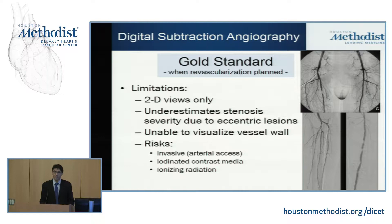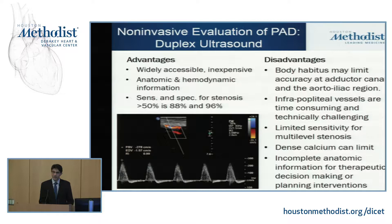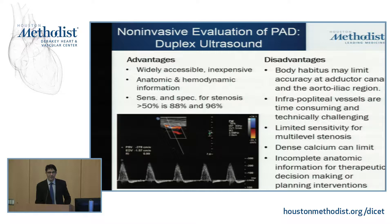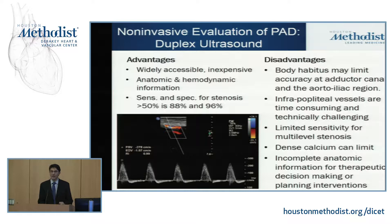Ultrasound is also an excellent and widely available technique. It gives you both anatomical and hemodynamic information — you evaluate waveforms to determine whether a lesion is significant or not. However, in certain patient populations with significant body habitus, it can be difficult to see the pelvic arteries, and it is very challenging in tibial vessels, which are small and require a highly qualified scanner to image well.